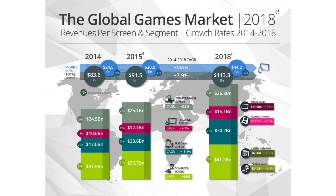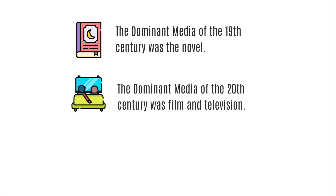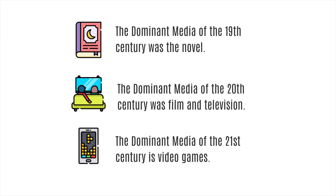Historically, it's important to think about games and where they sit in relation to other media. The dominant media of the 19th century was clearly the novel, the written word. The dominant media of the 20th century started out as radio, then film and television. And television is still up there — but predicting ahead, the dominant media of the 21st century is going to be video games. This observation is drawn from Dyson and Sauccia's History of Video Games in 64 Objects, which is a great book.